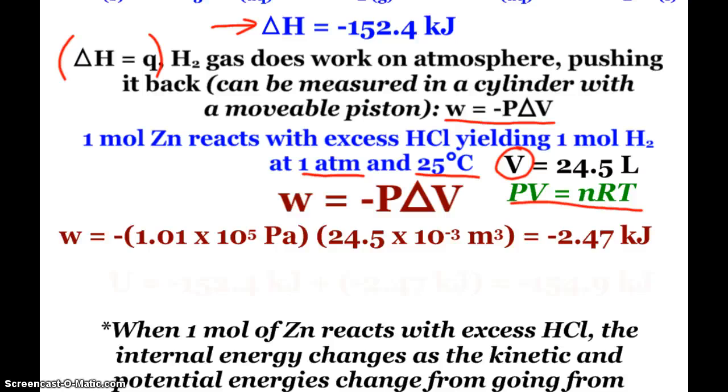So I go ahead and plug into my equation. Work is equal to negative pressure. And I'm going to use 1.01 times 10 to the 5th pascals, because I want my work unit to come out in kilojoules. Same thing here, 24.5 times 10 to the negative 3rd meters cubed. So I have the appropriate units. And I see I get negative 2.47 kilojoules.